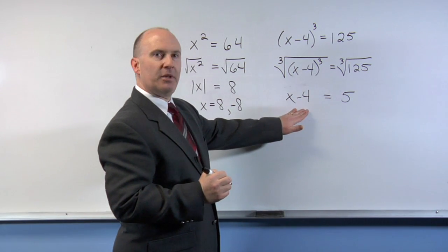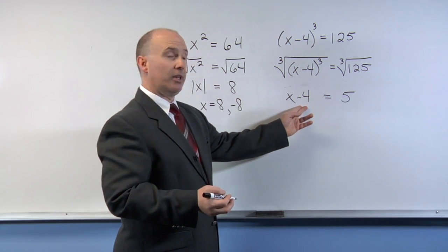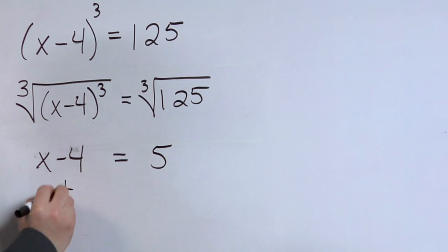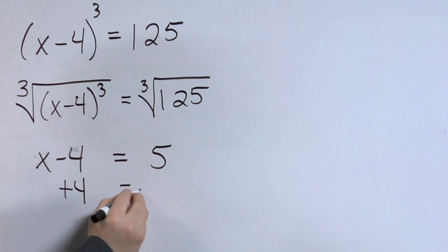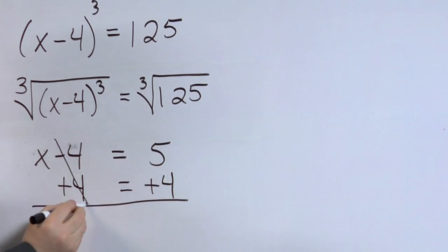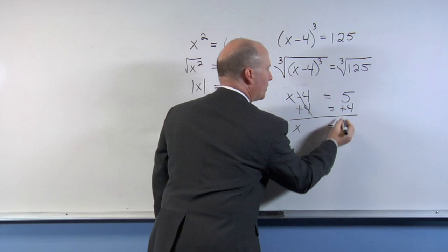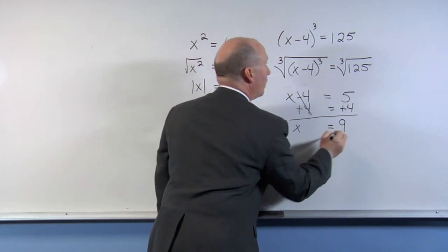The next step is to get x by itself by getting rid of the minus 4. We want to do the opposite, so we are going to add 4 on both sides. The minus 4 plus 4 drop out, and we're left with x equals 5 plus 4, which is 9.